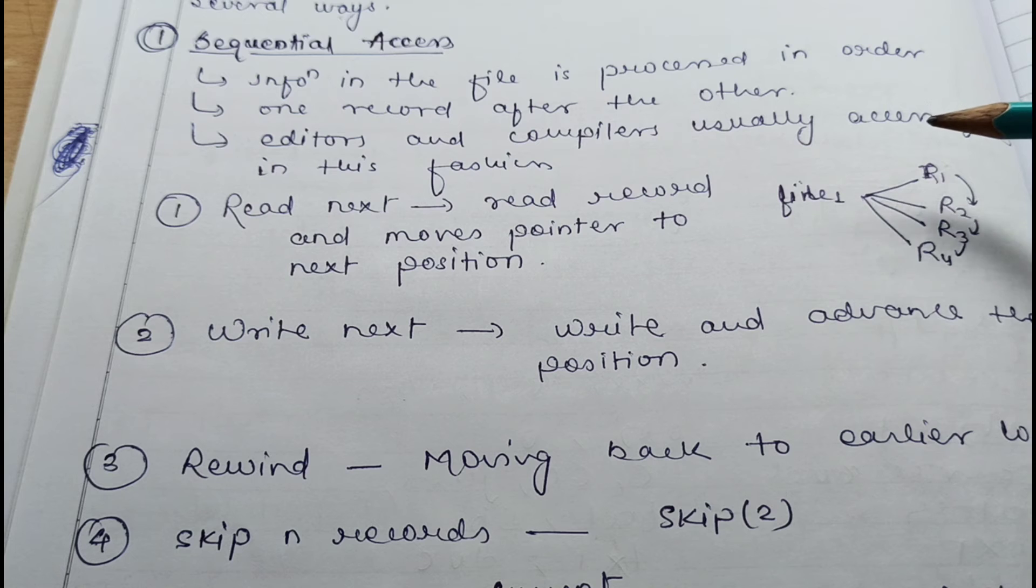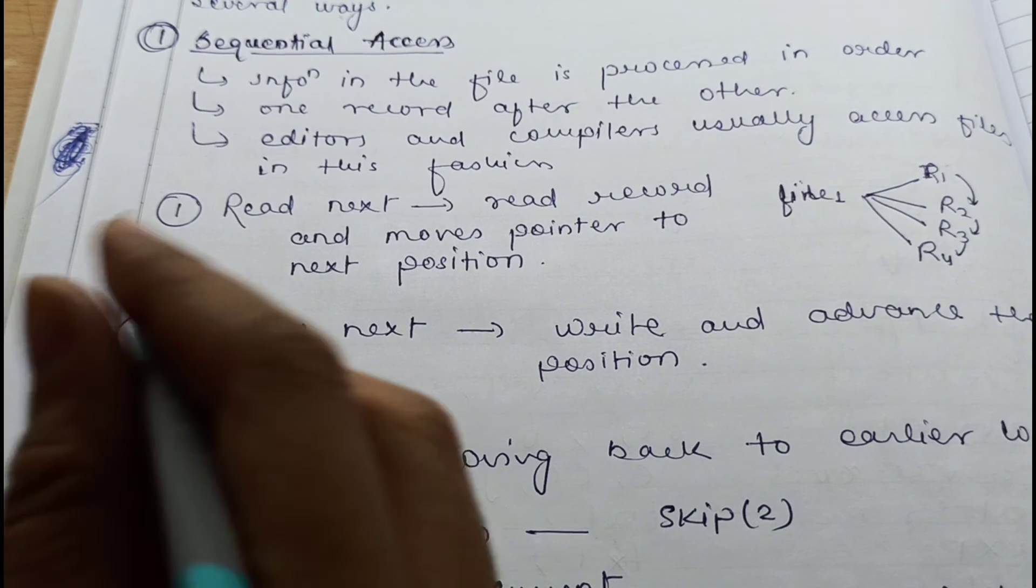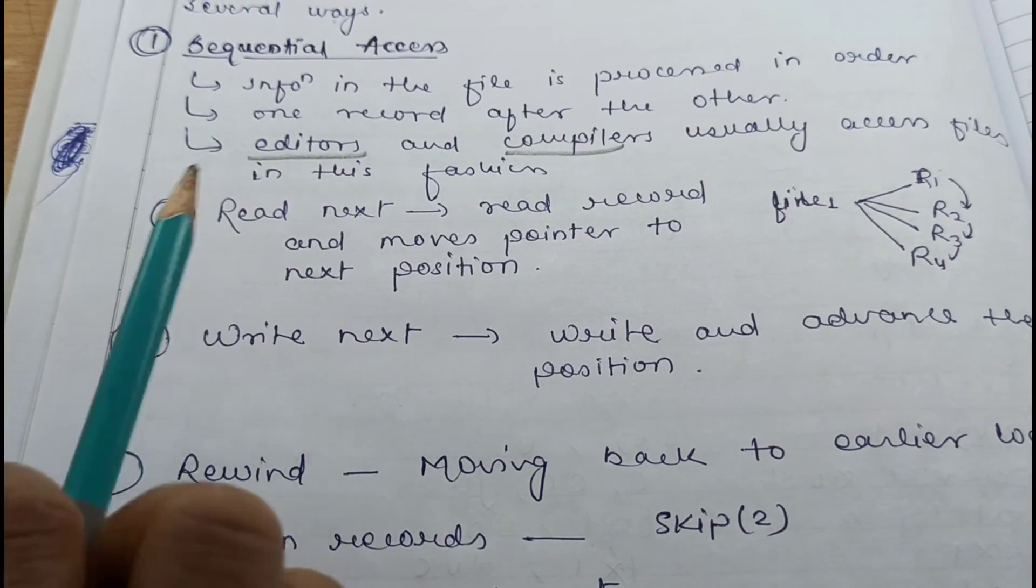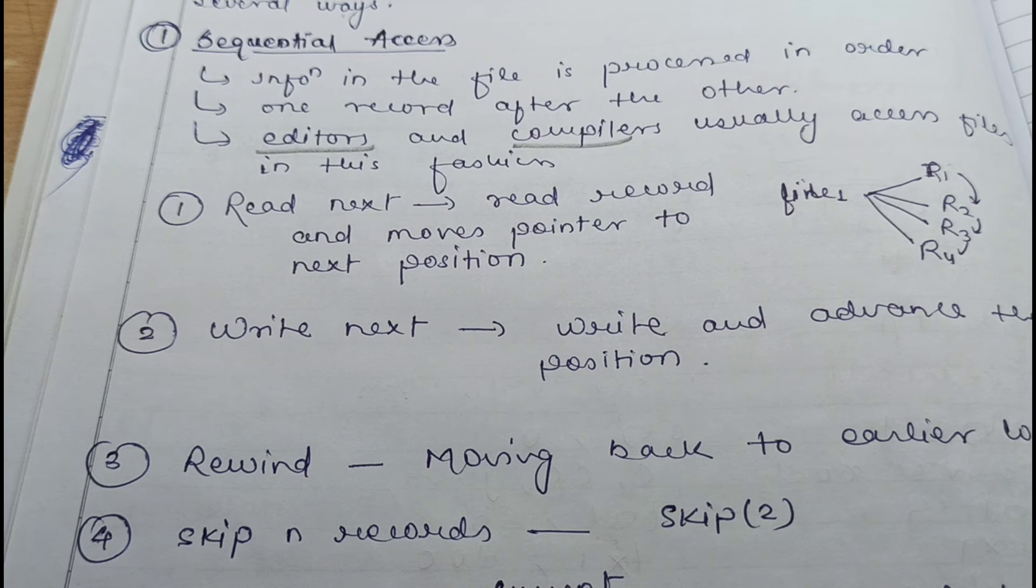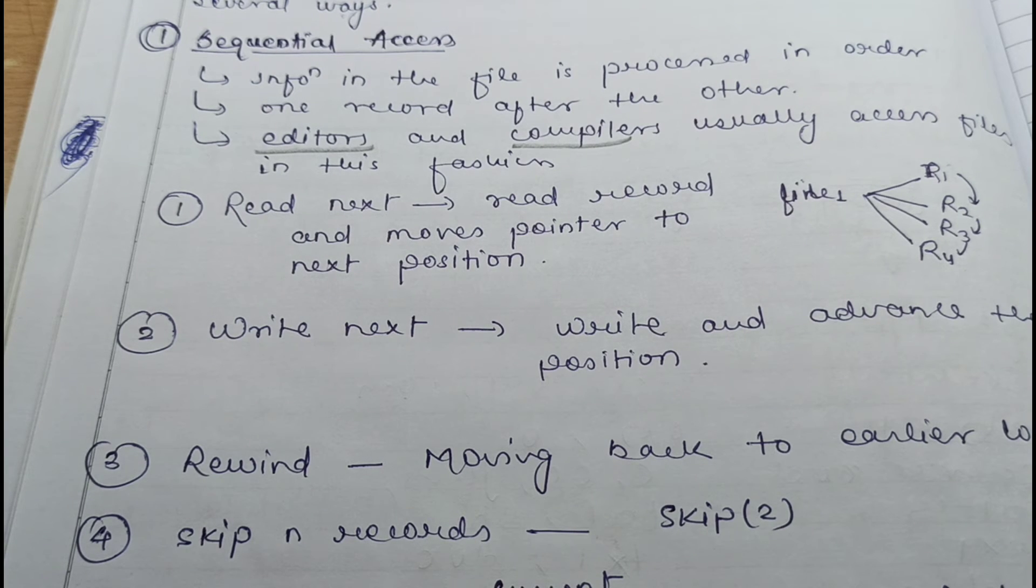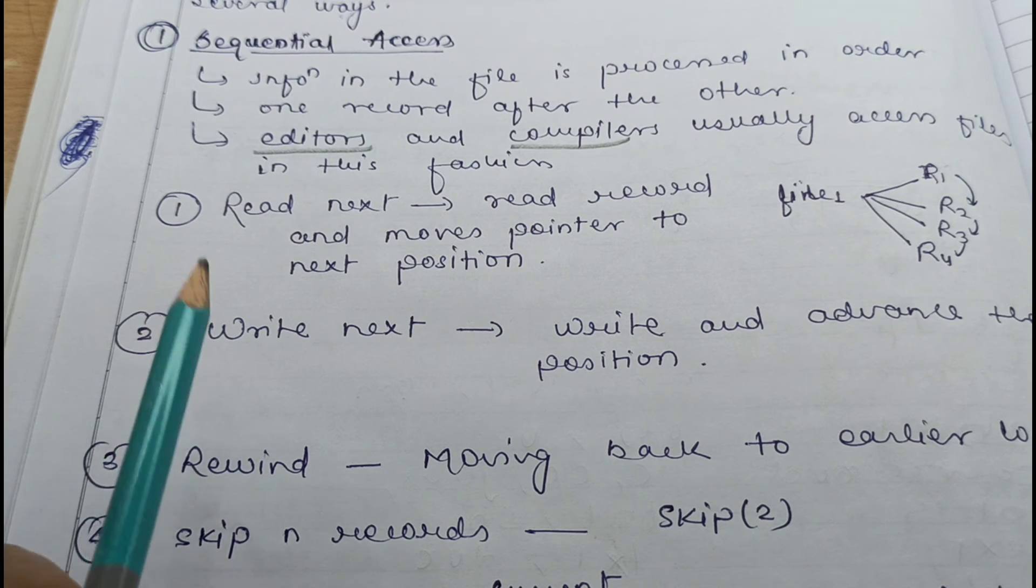You have to go through each and every record or each and every song, bits or bytes, records in between. So you cannot directly go to the third song; you have to pass the first two songs and then you can access the third one. So in the same way, sequential access is based on that tape model. Mostly editors and compilers usually access files in this fashion. Here it will perform three or four operations: if you are accessing the file, you will be reading or writing or rewinding or appending - the different operations that we have covered in the last video.